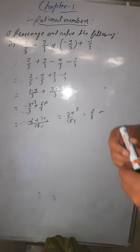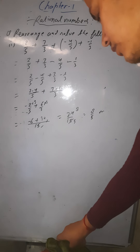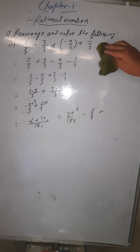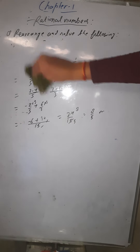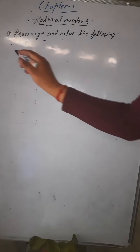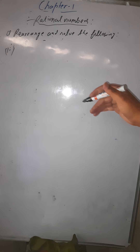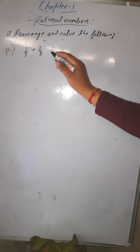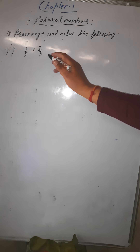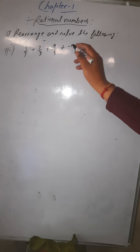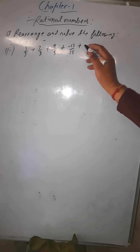Simplifying 24/15: 3 eights are 24 and 3 fives are 15, so the answer is 8/5. That is how you can rearrange and solve. Now let me write one more question. The next question is: 3/5 + 7/3 + 9/5 + (-13/15) + (-7/3).